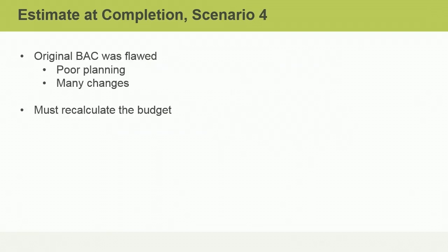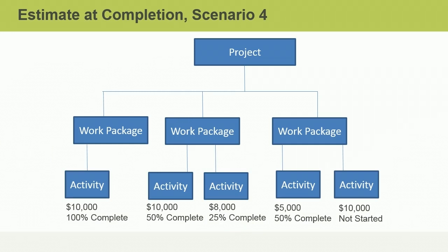In scenario number four, we realize that our original BAC was flawed. We either planned poorly or so many things have changed that we can't use the BAC as a foundation for new estimates. We basically need an opportunity to reboot the budget plan. However, we are already in the middle of project work, so we must consider data and tools we already have available, including the work breakdown structure.